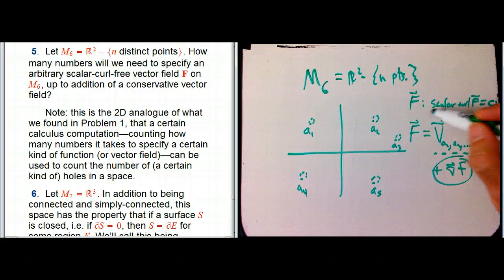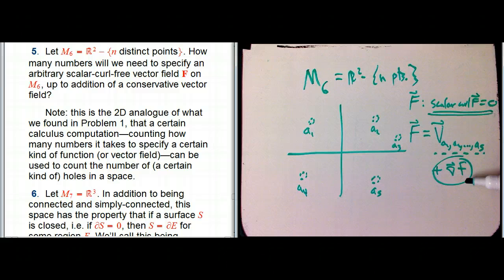So here's the implicit characterization of F, that its scalar curl is zero. Easy to check if you're given one. Here's the explicit construction. Construct the special vortex with certain strengths and then add in any conservative vector field that you want. The claim is those are equivalent, the implicit and explicit descriptions.